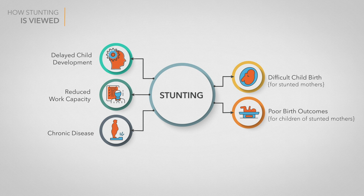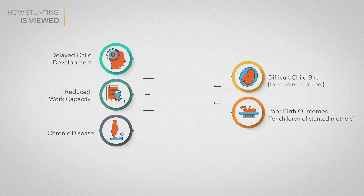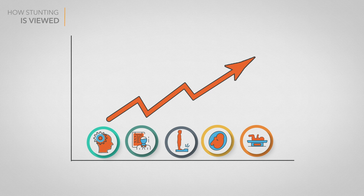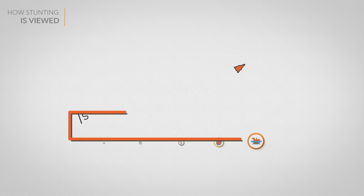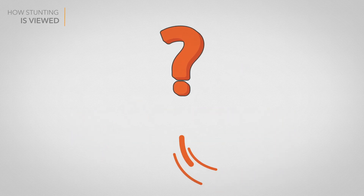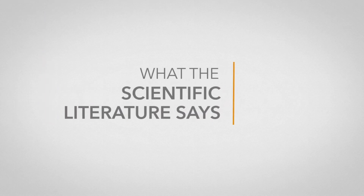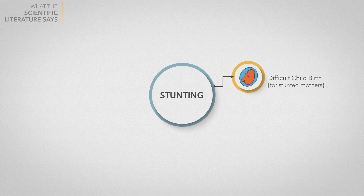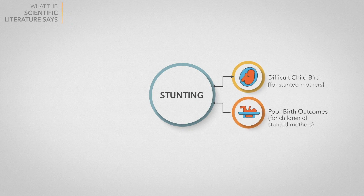But if this were true, then removing stunting would lead to improvements in all of these outcomes. But is this causal thinking correct? We carefully reviewed the evidence. In fact, stunting causes only two of these outcomes: difficult childbirth and poor birth outcomes.